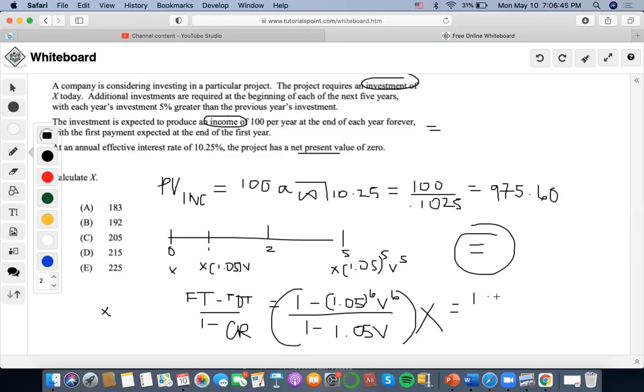So, I'm going to do 1 minus 1.05 to the 6th times... And V being 0.253...